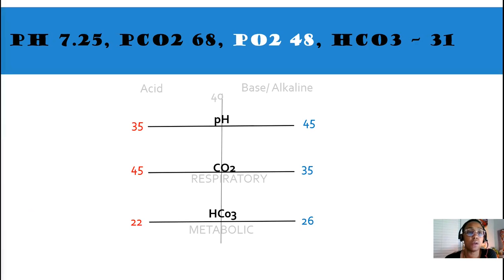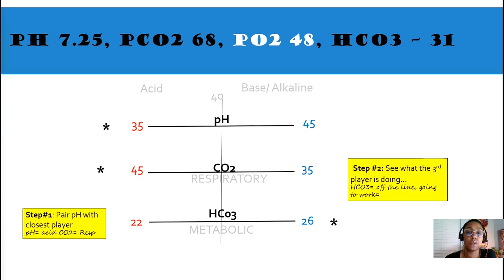Here's our next ABG. pH 7.25. CO2 is 68. O2 is 48. And our HCO3 or bicarb is 31. Step number one, pair the pH with the closest player. In this case, it's respiratory. Step number two, see what the third player out is doing. Bicarb is off the line going to work on its way to compensation.